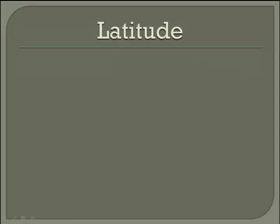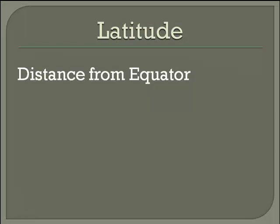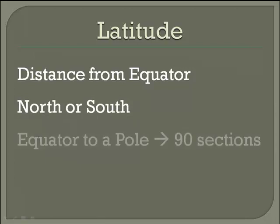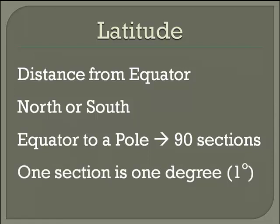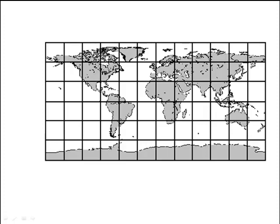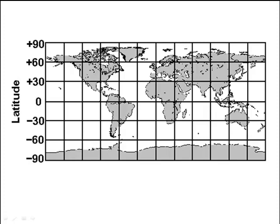Latitude is the distance from the equator, either north or south, to one of the poles. That distance from the equator to a pole is divided into 90 sections — one section is one degree. Distances north can be labeled as plus degrees, and distances south of the equator can be listed as negative or minus degrees. Either way is okay.